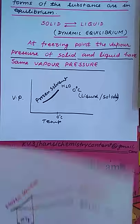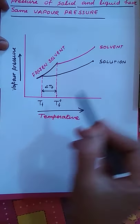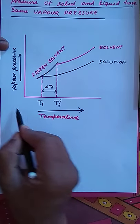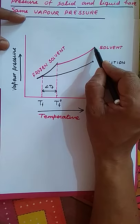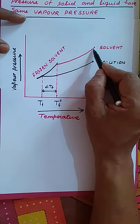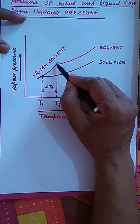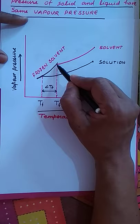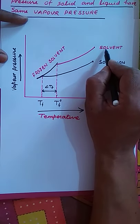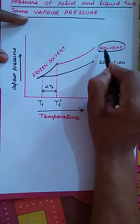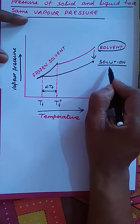In the graph, this is the curve of frozen solvent. The x-axis represents temperature and the y-axis represents vapor pressure. The solvent is in liquid form with some vapor pressure. As temperature decreases, the vapor pressure decreases and reaches a temperature we represent as T°F — the freezing point temperature. If a non-volatile solute is added to the solvent, the vapor pressure of the solution decreases further.